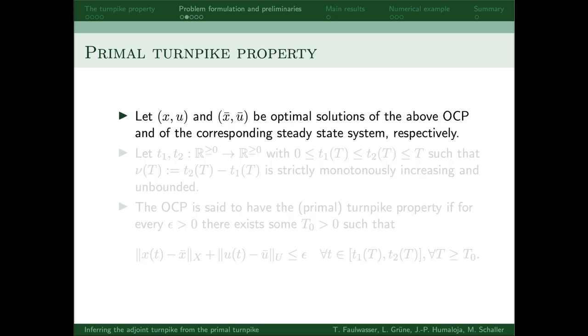So, let x u denote an optimal solution of the OCP, and x bar u bar the corresponding steady state solution. Note that we don't discuss the existence of solutions, but just assume that at least one optimal solution of the OCP exists. Now, let's consider two functions t1 and t2 of the horizontal length T.